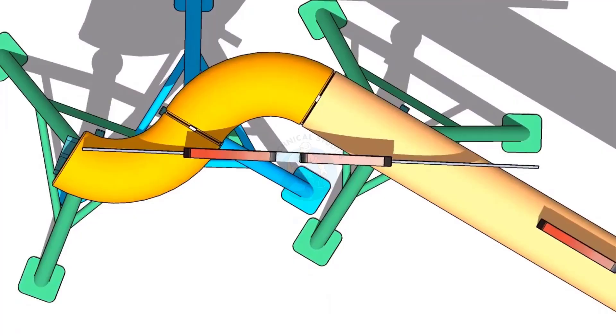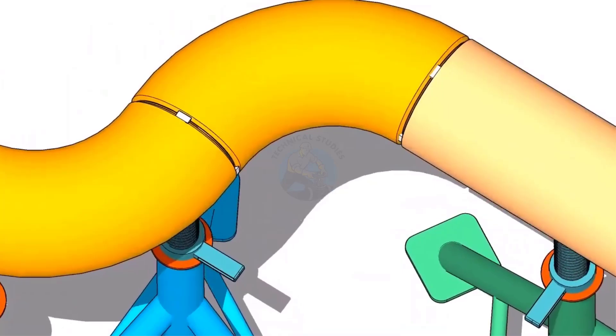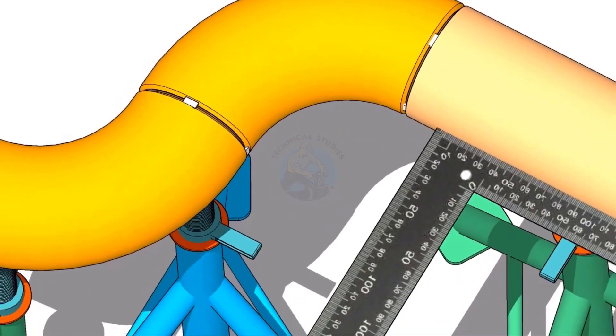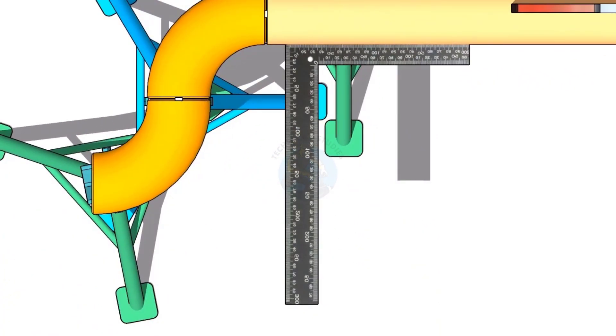Tack weld on the top and the bottom. Put two right angles. One on the face of the elbow and one on the pipe side.